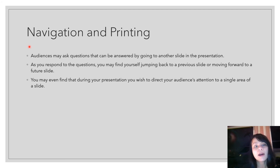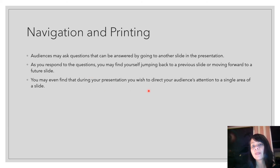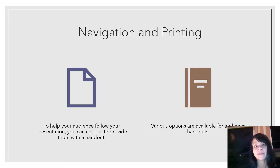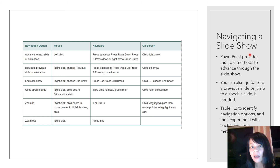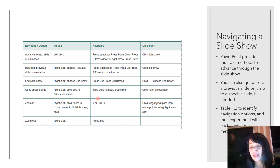In our final section we'll look at navigation and printing. Audiences may ask questions during your presentation that require you to jump to different slides, moving back to a previous slide or forward to a future one. You might also want to zoom in to direct your audience's attention to a single area of a slide. PowerPoint provides many different ways to advance through the show — the navigation options table in your textbook shows all of these, and the correct way is whichever works best for you.